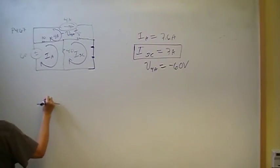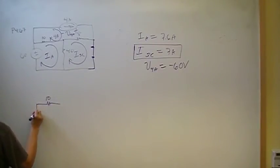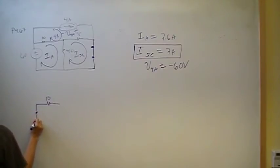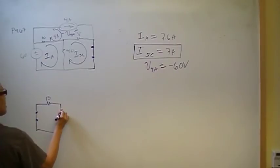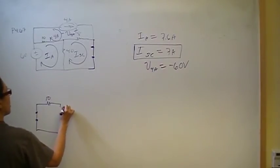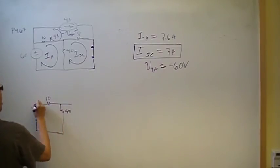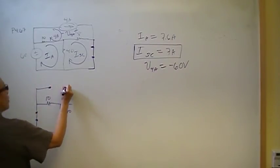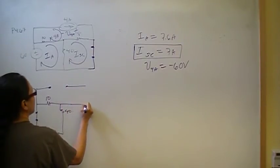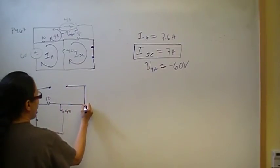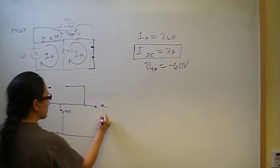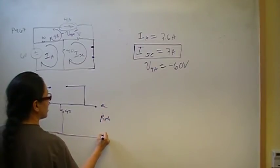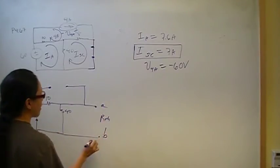We have 10 ohms here. We're going to short the voltage source. We have 40 ohms here. We're going to open the current source. Then we ask: what is the resistance seen by the load?